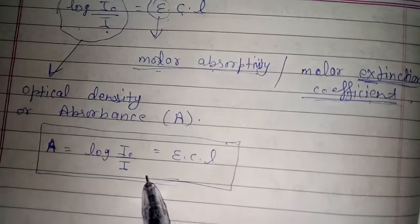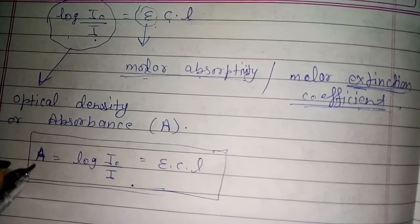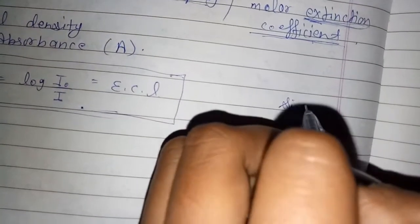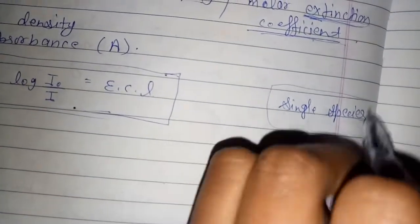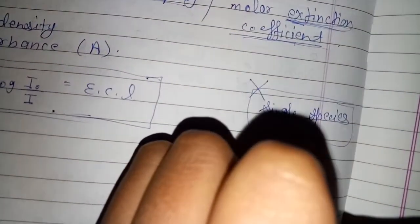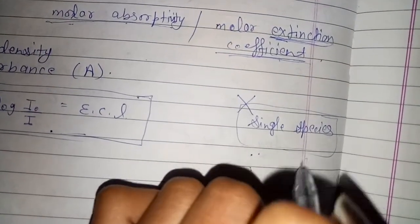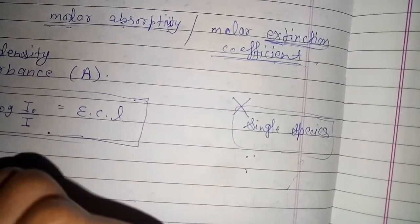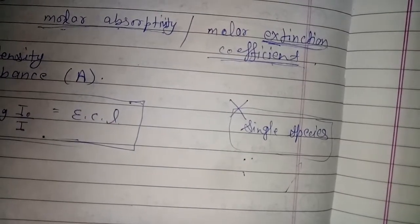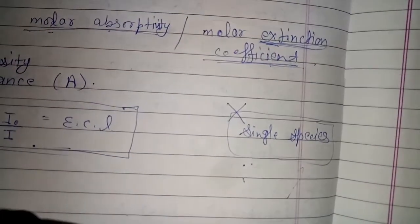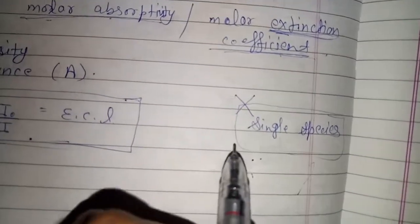Beer-Lambert Law is strictly obeyed when dealing with the UV spectra of a single species. However, if a sample contains different structural forms of the molecules in equilibrium with each other — such as in the case of keto and enol tautomers — the law is not obeyed. It is also not applicable if the solute, sample, and solvent interact with each other to form complexes.